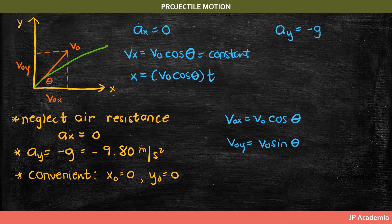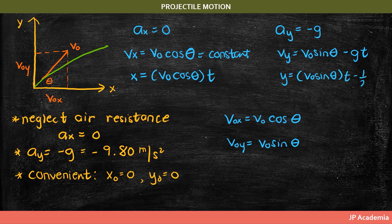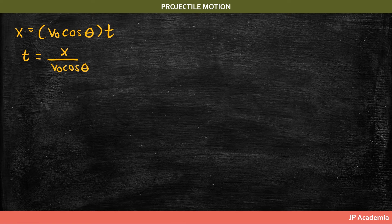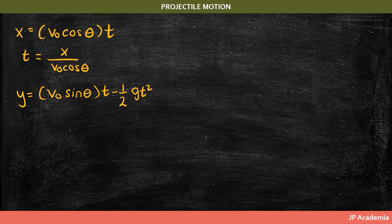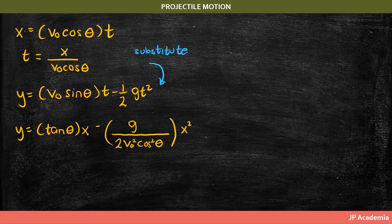For the acceleration along y, we have a sub y equal to negative g. The velocity in the y-direction equals v0 sin theta minus g times t. For the position along the vertical, we have the corresponding expression given that the acceleration equals negative g. From the equation for position x, we get t equal to x over v0 cosine theta. Substituting into the y-position equation gives a parabolic equation in terms of x, which passes through the origin where x0 and y0 equal zero.